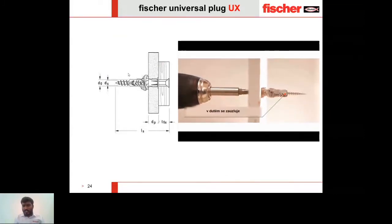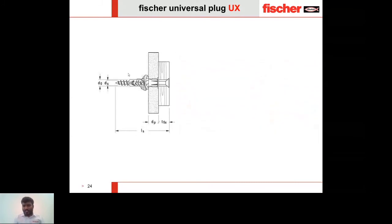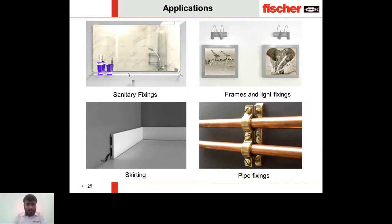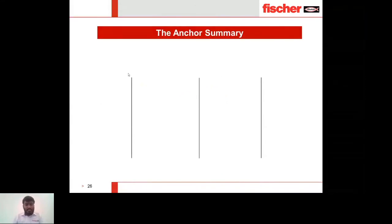The short video shows how the screw penetrates completely through the anchor to form a small knob, creating a better interlock that prevents the anchor from pulling out and allows it to carry more load. Applications include sanitary fixings, frames, light fixings, skirting, and pipe fixings for wall-mounted installations.